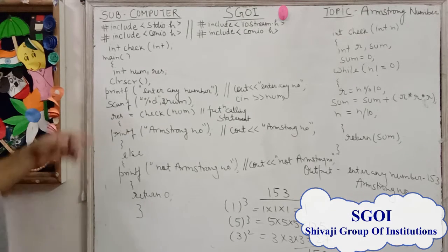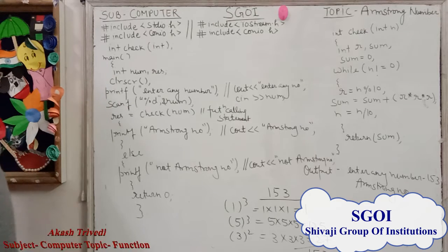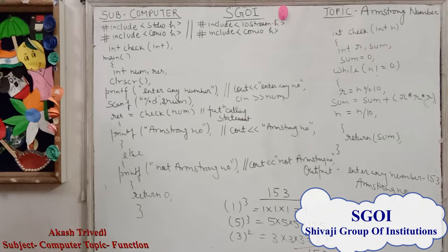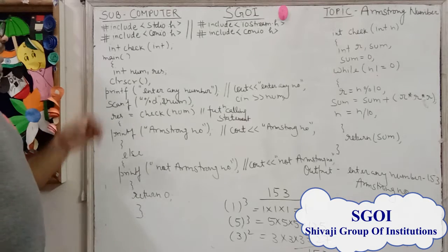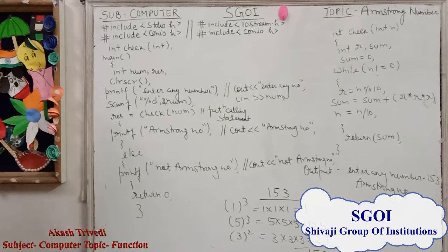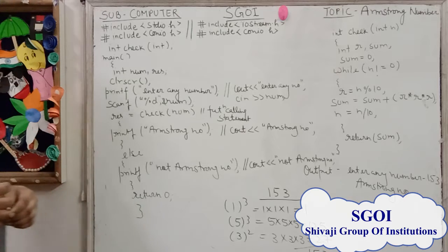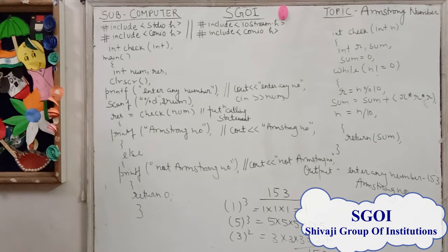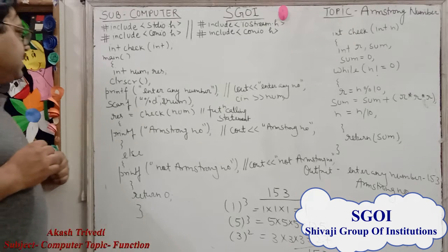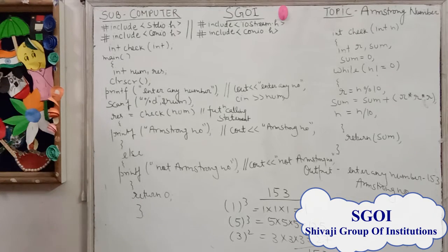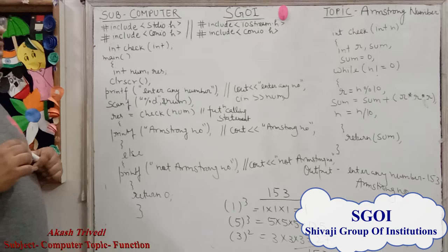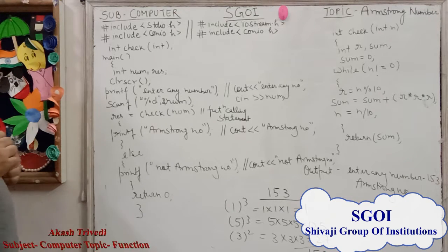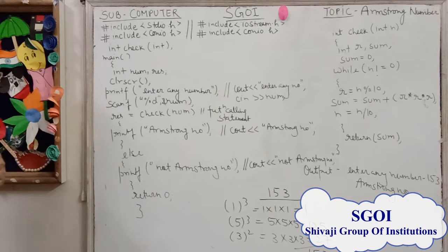Firstly, we declare two variables, num and res, having integer data type. Num is the input number and res is the result. After that, we use the clrscr() function, which is used in C and C++ programming to clear the output screen.